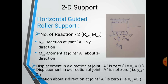The horizontally guided roller support can move in the horizontal direction. In this case, RA x is zero, and the number of reactions is two, in the form of RA y and MA z. RA y is the reaction at A in the y-direction and MA z is the moment at joint A about the z-direction. Displacement in the y-direction at the joint is zero, displacement in the x-direction is not zero, and theta is zero.